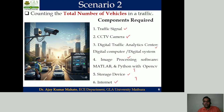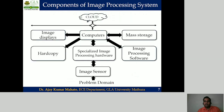These are two different scenarios, and depending on the scenario we need different components to perform our image processing project work. In general, this block diagram represents the various components usually used in an image processing system. It starts with the problem domain, where you specify your target object — it could be a traffic signal, a seminar hall, or anything else. Depending on the target object, you choose the appropriate instrument or camera to capture it.